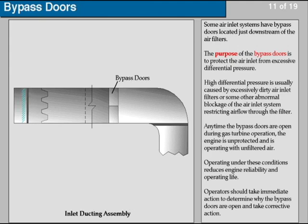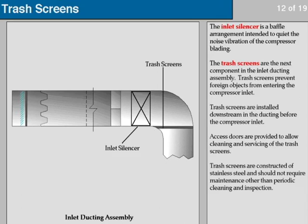Operating under these conditions reduces engine reliability and operating life. Operators should take immediate action to determine why the bypass doors are open and take corrective action. The inlet silencer is a baffle arrangement intended to quiet the noise vibration of the compressor blades. The trash screens are the next component in the inlet ducting assembly. Trash screens prevent foreign objects from entering the compressor inlet and are installed downstream in the ducting before the compressor inlet. Access doors are provided to allow cleaning and servicing of the trash screens.